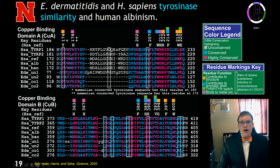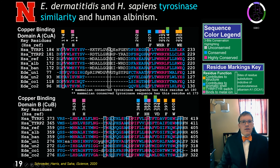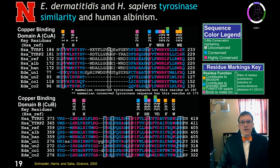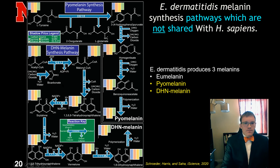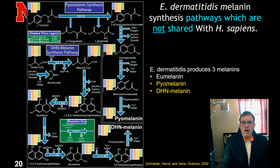For the tyrosinase enzyme, the key enzyme in melanogenesis, the active sites are very similar between humans and Exophiala. These are different human alleles for tyrosinase, and these are four different gene copies of Exophiala, shown in a COBALT alignment on the active sites. Several important residues are conserved, such as those associated with oculocutaneous albinism, shown by the white boxes. There are also two types of melanin that Exophiala produces which are not shared with humans: peel melanin and DHN melanin, whose synthesis pathways are shown here.